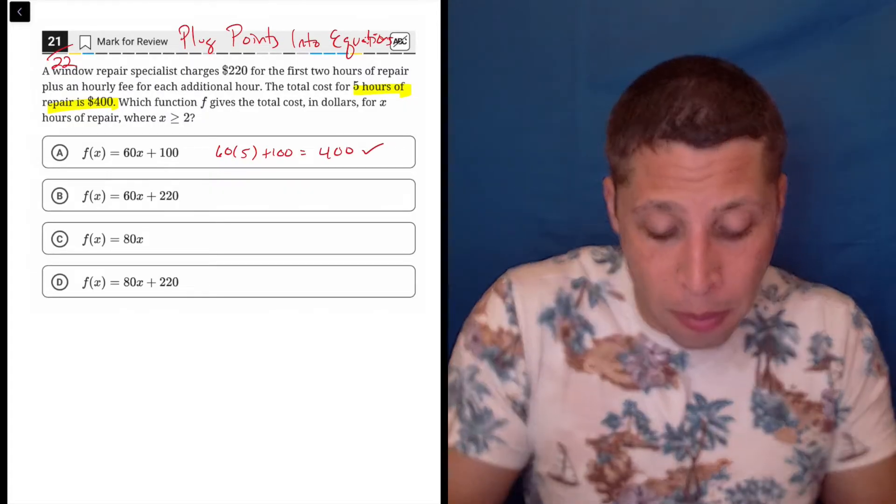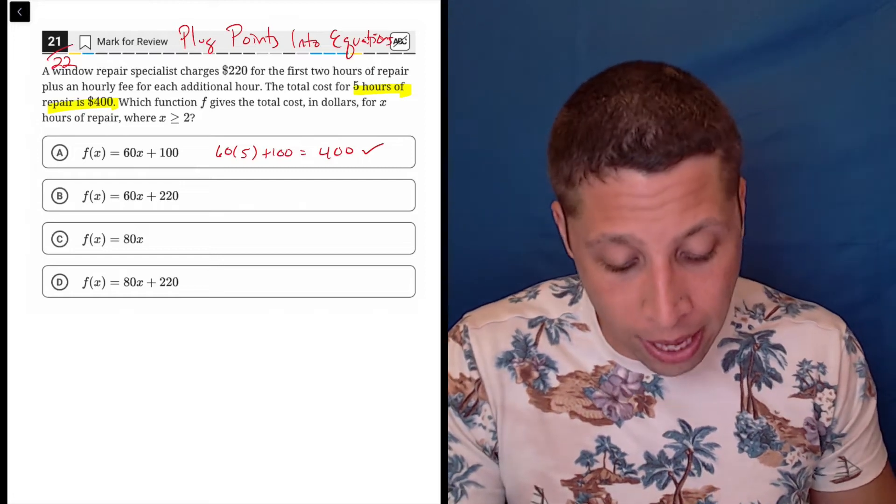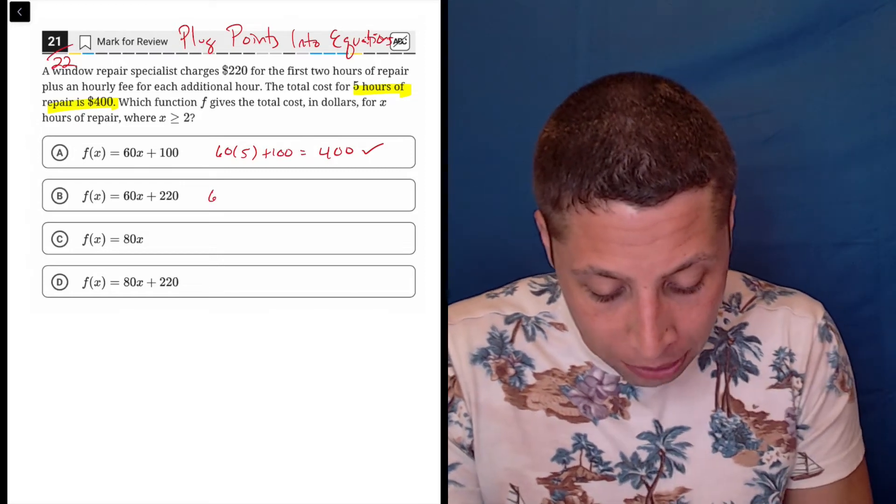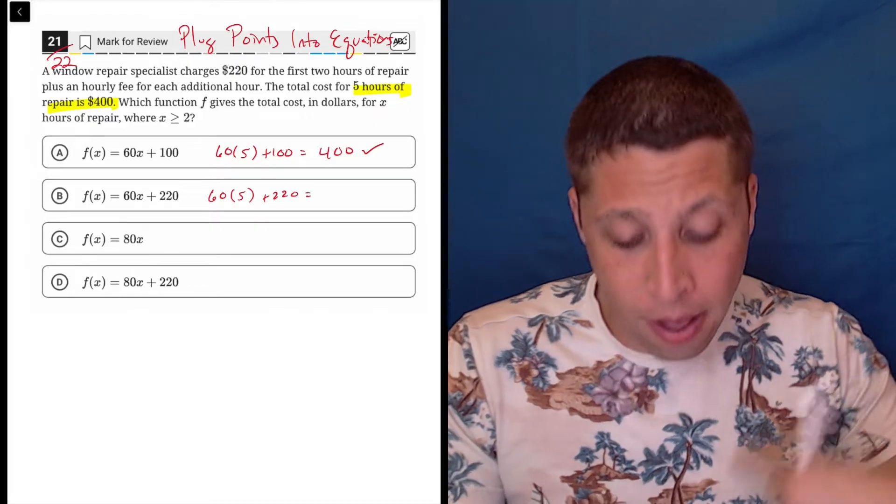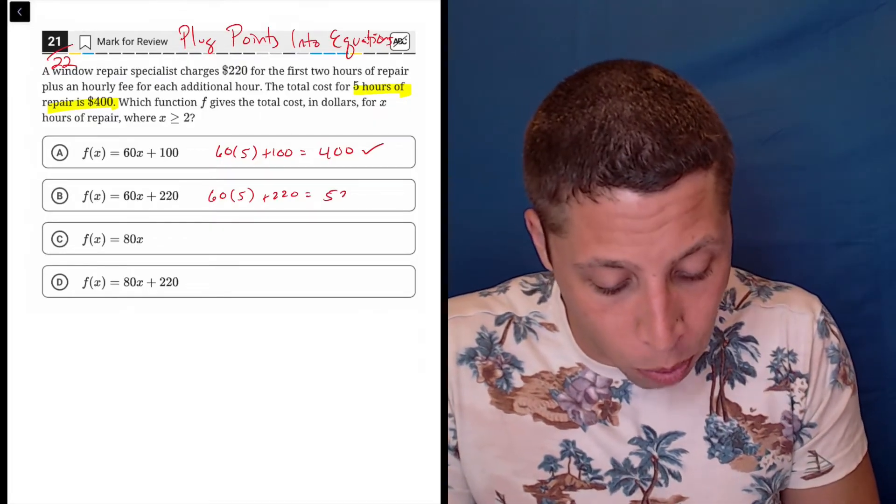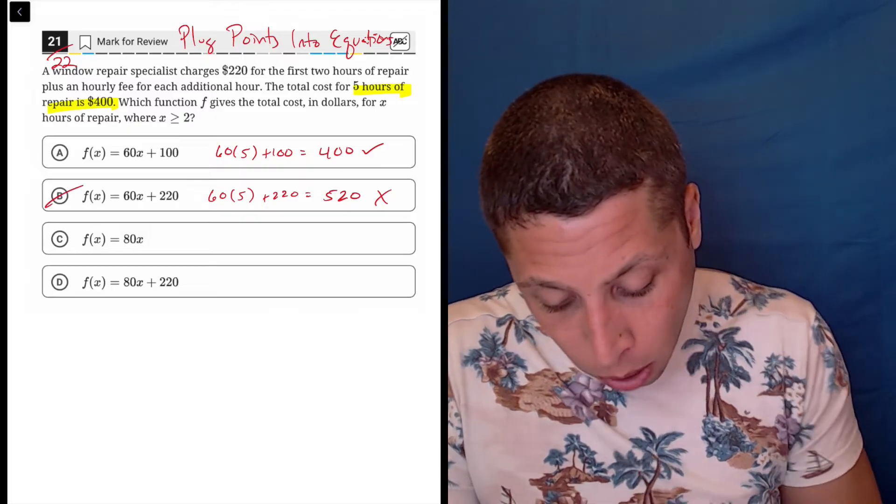Now, it might not be right. There might be multiple answers here that give us the right thing. So we got to double check. Let's go down the line. 60 times five plus 220. Well, that's again 300, but now plus 220 is 520. So that's not 400. That's wrong.